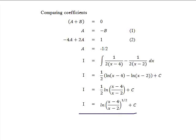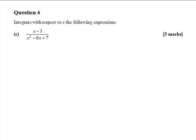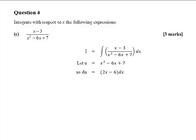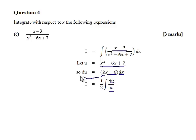From parts A and B we know we're not going to be able to factorize x squared minus 6x plus 7, so instead let u equal x squared minus 6x plus 7. Differentiating gives du equal to (2x minus 6) dx. Substituting back into the original integral, we get one half outside of du over u — u is x squared minus 6x plus 7, du provides (2x minus 6)dx, and the numerator x minus 3 matches with the 2 taken to the other side.